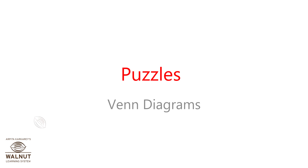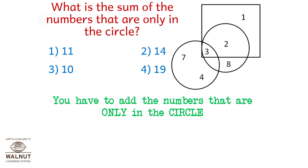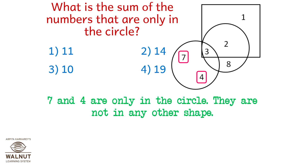Puzzles, Venn Diagrams. What is the sum of the numbers that are only in the circle? You have to add the numbers that are only in the circle. Let's mark those numbers. Seven and four are only in the circle — they are not in any other shape.